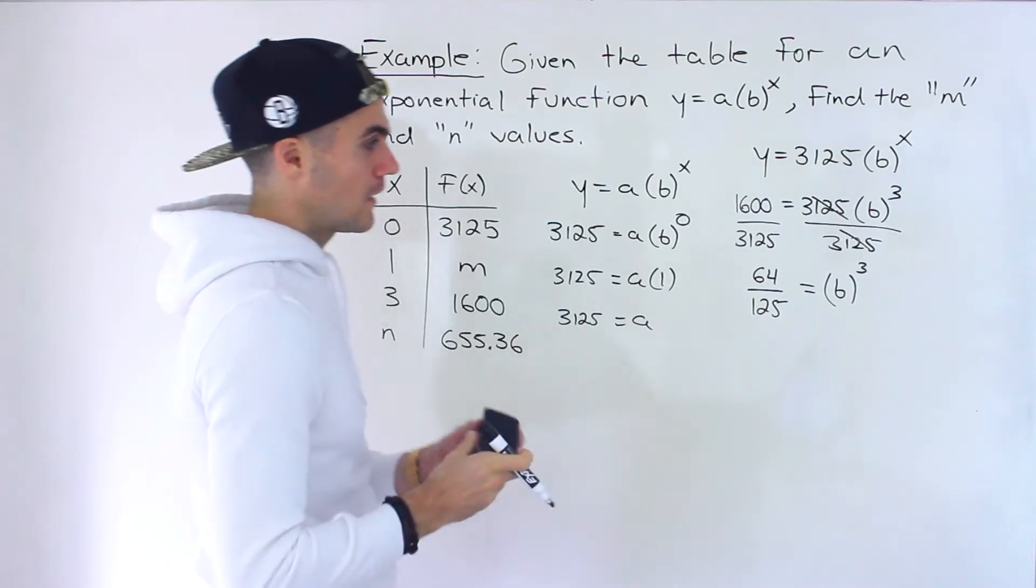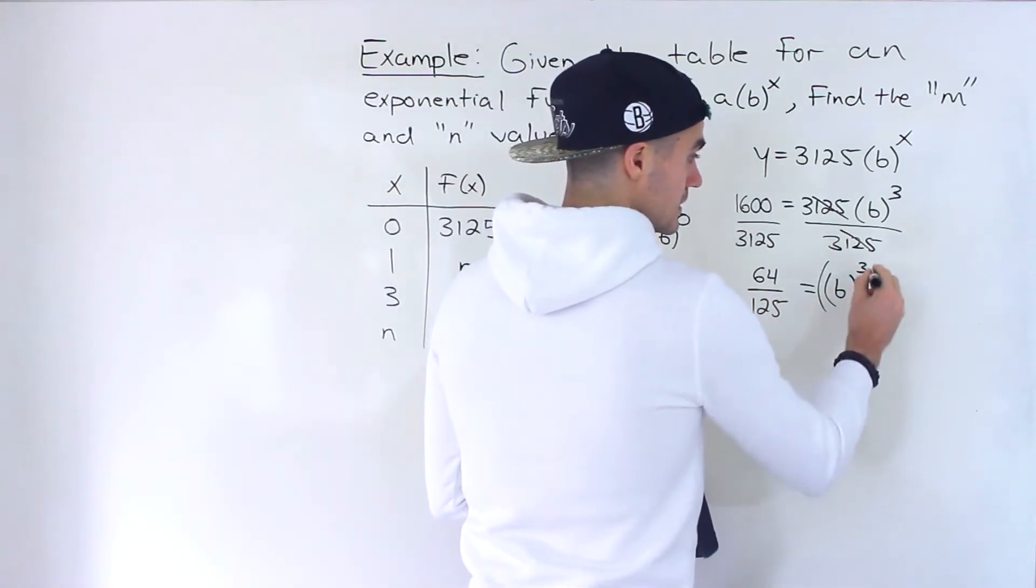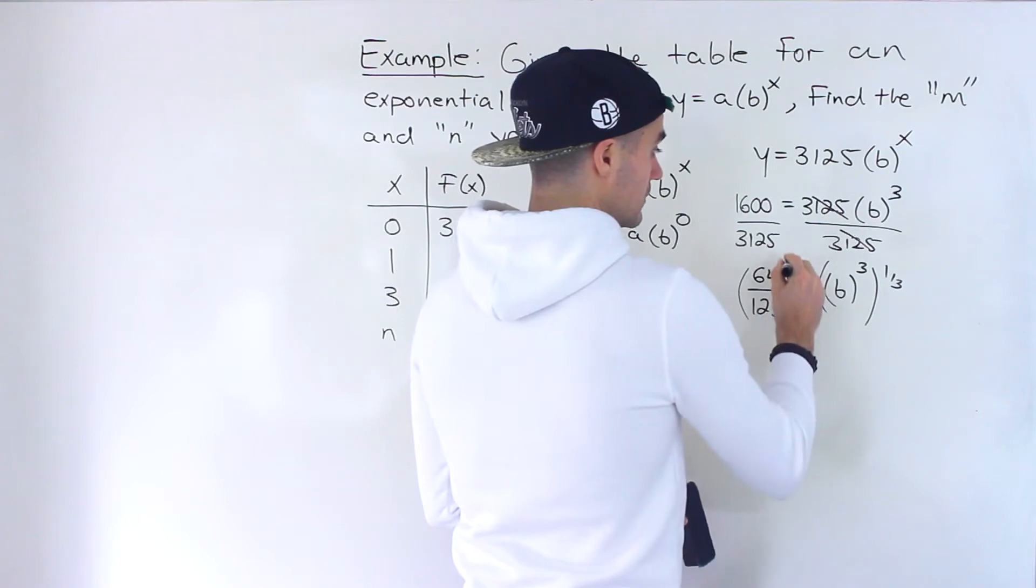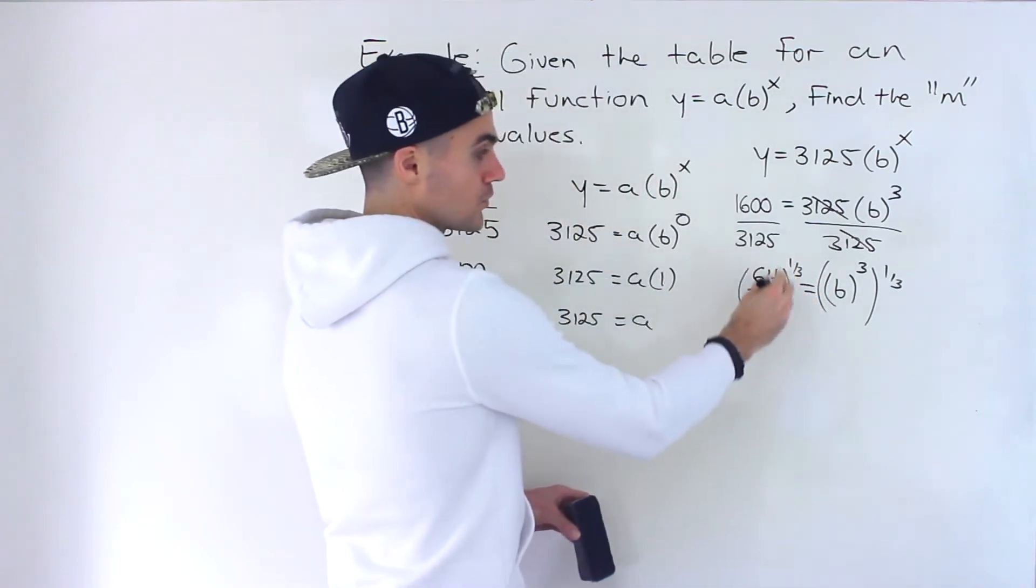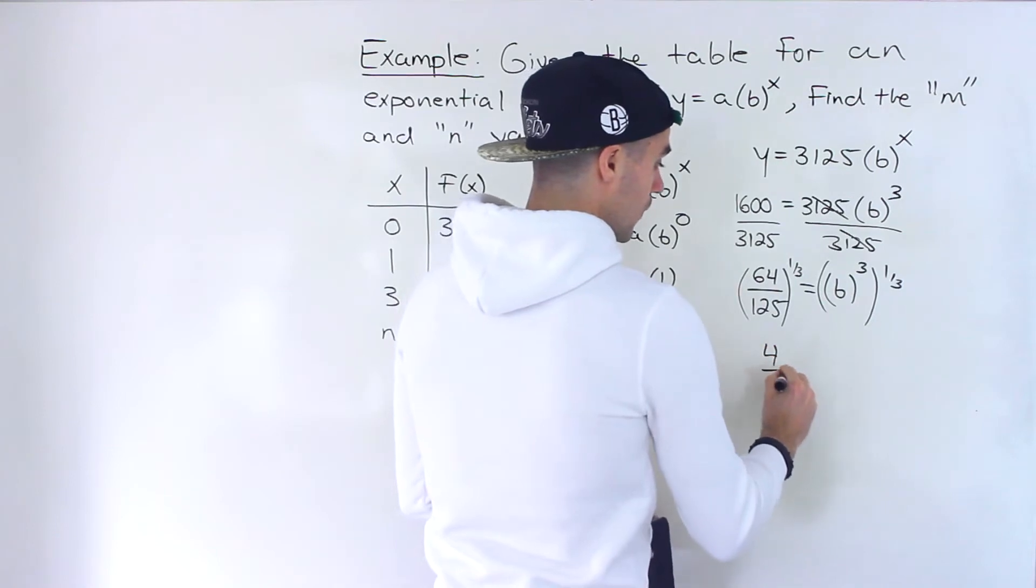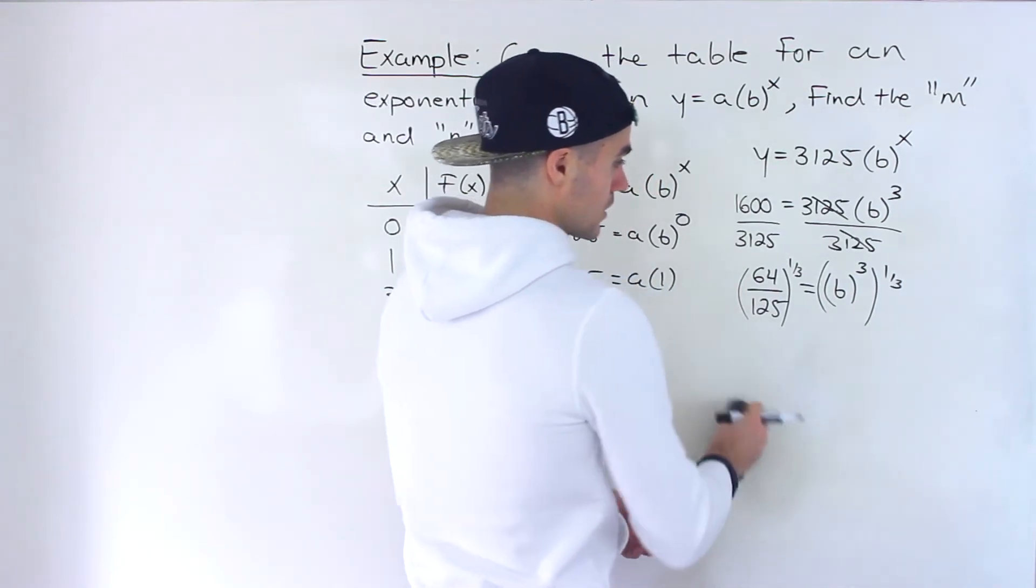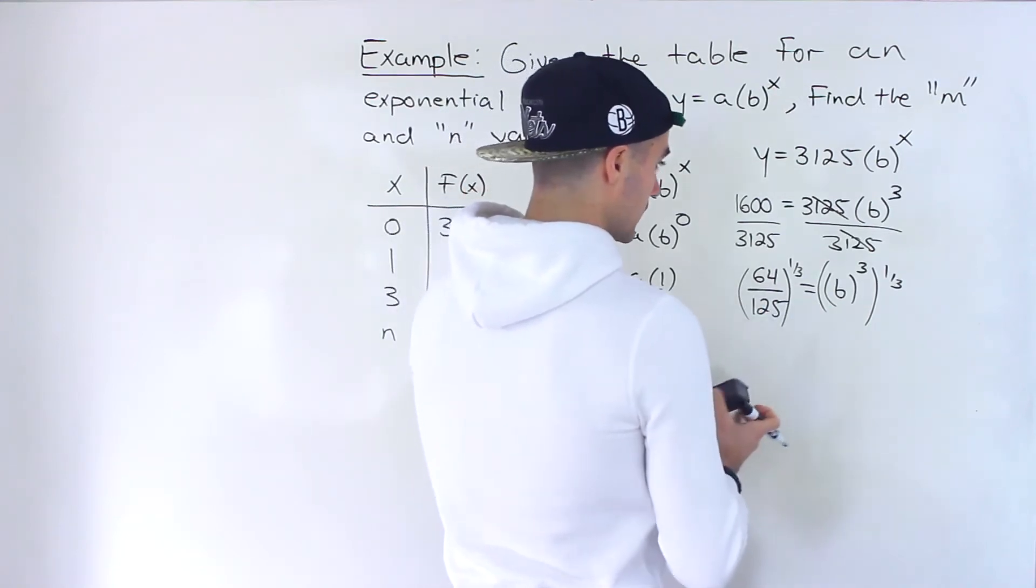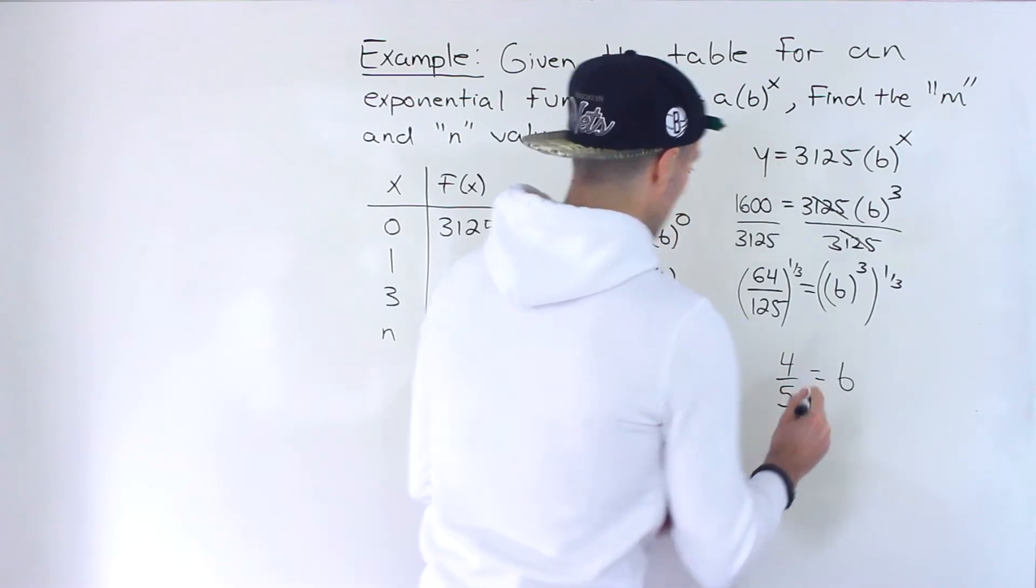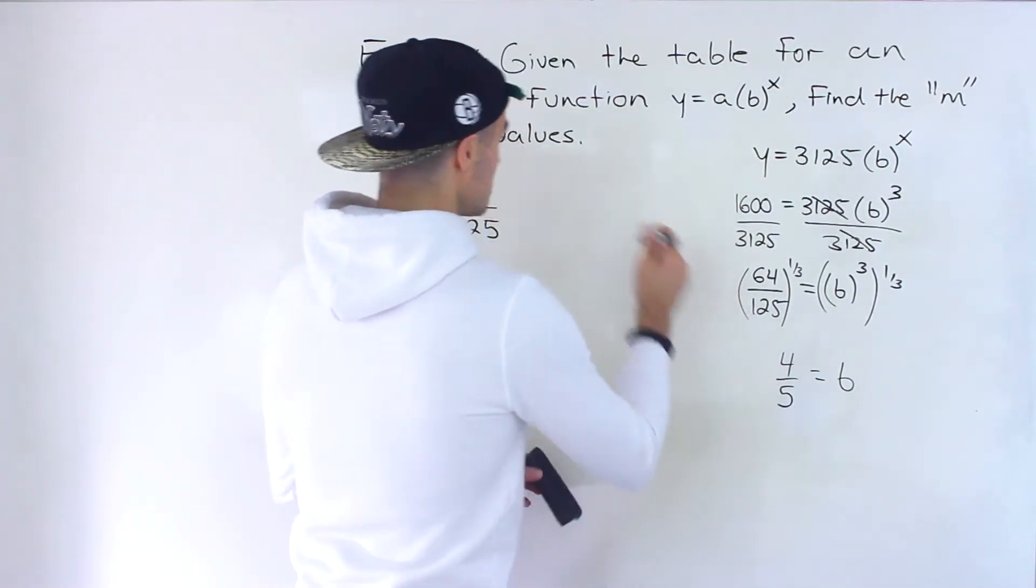And then multiple ways to go about it here to solve for this b value. You could take both sides to the reciprocal of that exponent. So you take the third root of this, and you'd end up with 4 over 5. Another way to go about it is, let me just write the answer here, and I'll show you what else you could do.